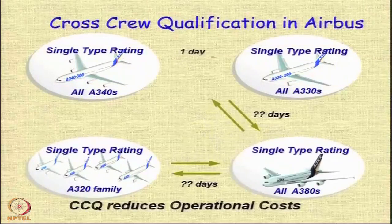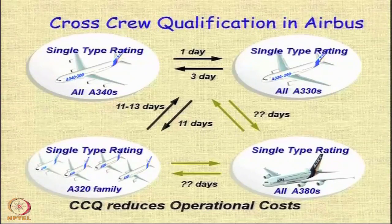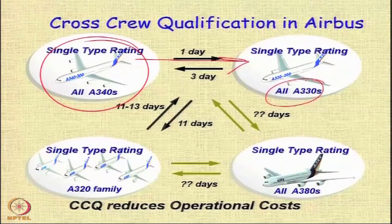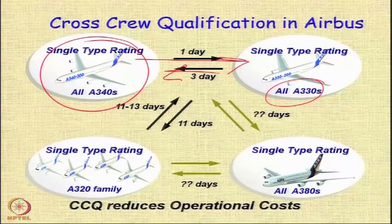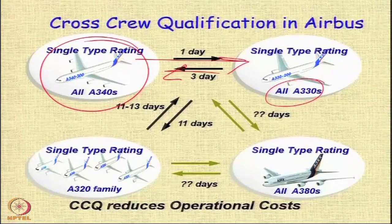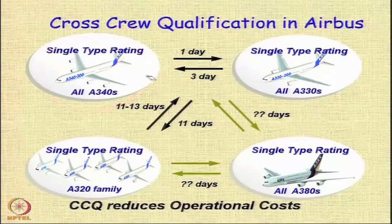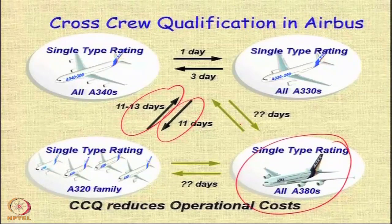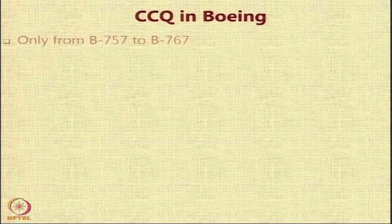In operation, commonalities are possible through cross-crew qualification on Airbus aircraft. A pilot qualified on the A340 can convert to flying the A330 within a day, and converting from the A330 to A340 takes just three days. If you want an A340/A330-qualified pilot to operate smaller Airbus aircraft, conversion takes only 11 to 15 days. The A380 is also expected to offer similar operational advantages.